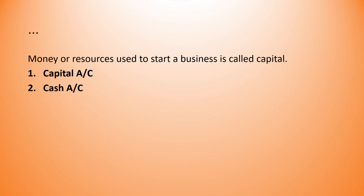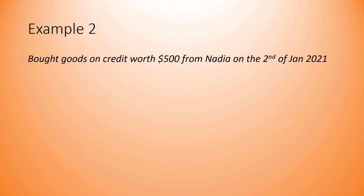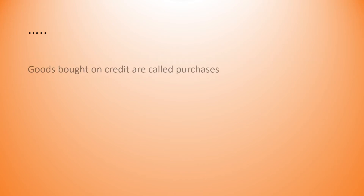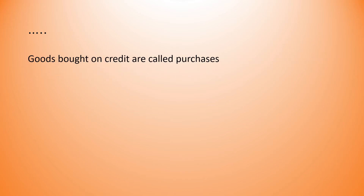Let's look at another example. In this transaction, goods were bought on credit from Nadia. The keywords are 'goods bought on credit' and 'Nadia.' Goods bought on credit are called purchases, making the first account the purchases account. The second account becomes the Nadia account.